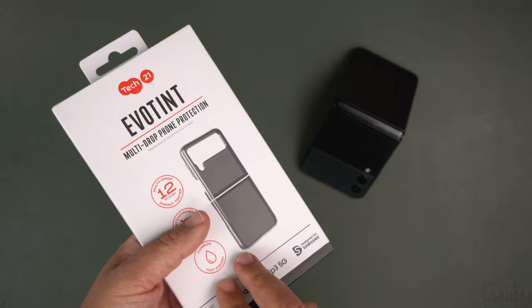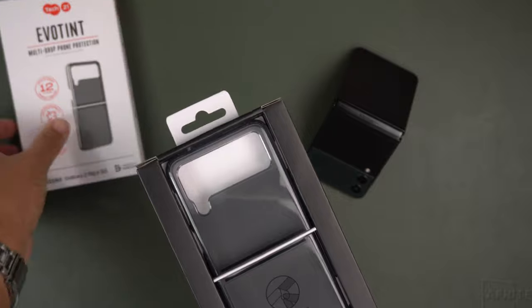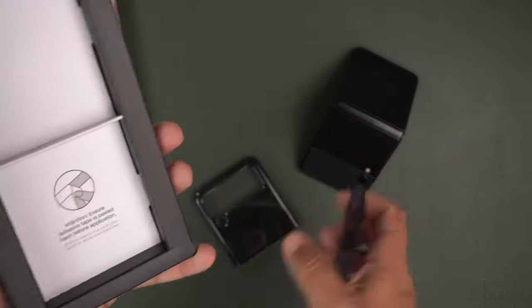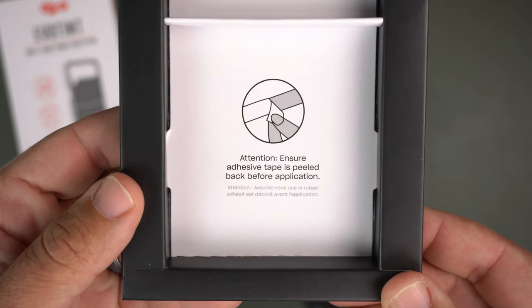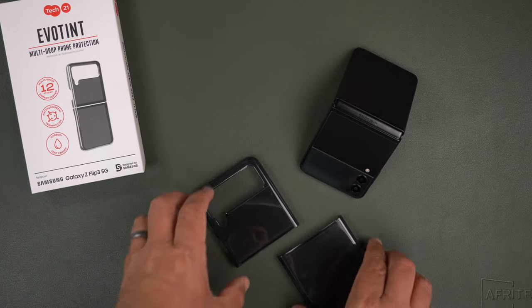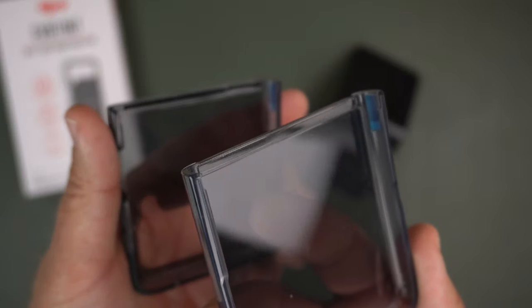It's super easy to get out, you just slide it out. You have one piece and two pieces, and it says attention: ensure adhesive tape is peeled back before application. Just like their Evo Clear case, it has these adhesive strips.